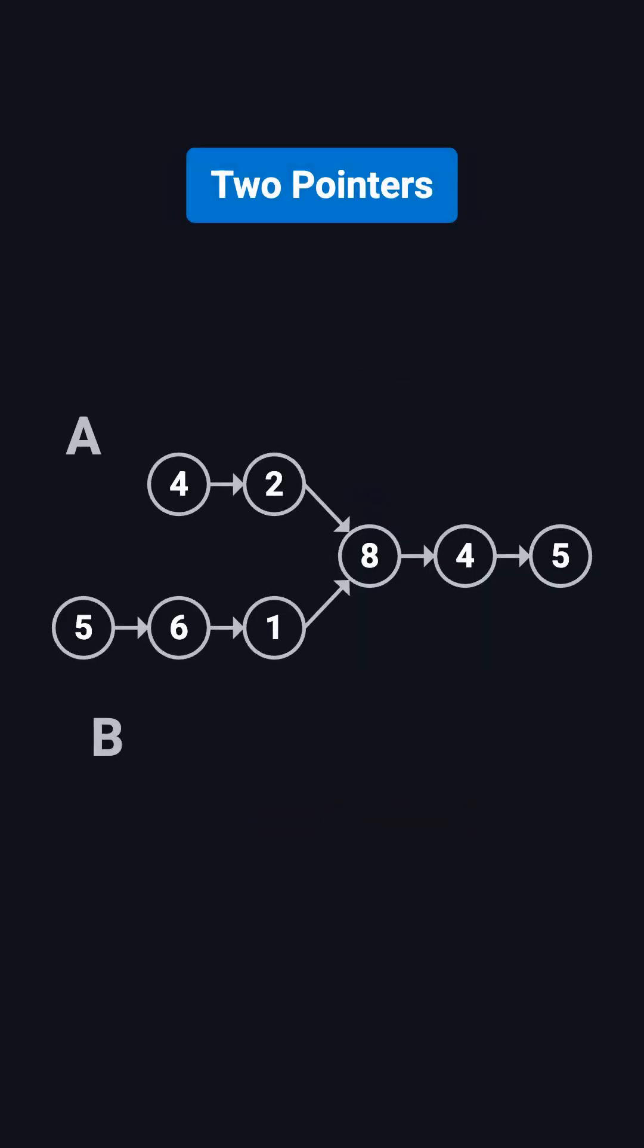There's also a more elegant solution, often called the two-pointer technique. We use two pointers, pA and pB, starting from the heads of list A and list B. They move forward step by step. When one pointer reaches the end of its list, it switches to the head of the other list and keeps going.